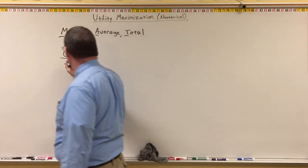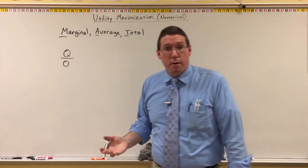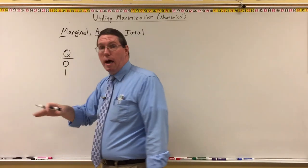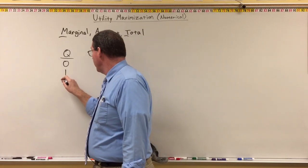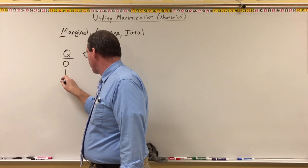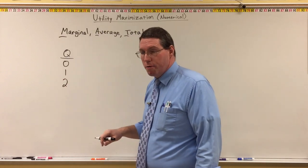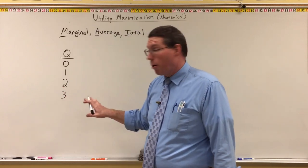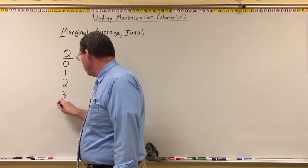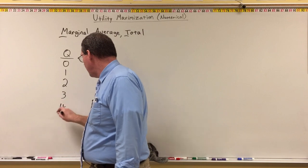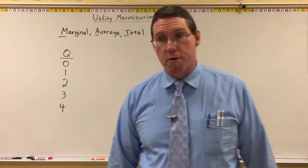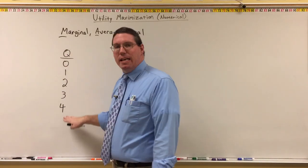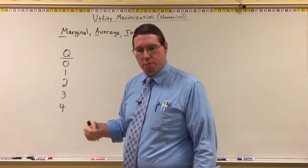I could purchase zero taquitos, one taquito, two taquitos, three taquitos — which is getting a little dangerous for my blood pressure — or, if I'm feeling really risky, maybe four taquitos at QT. This is representing how many of something a person might purchase and consume.